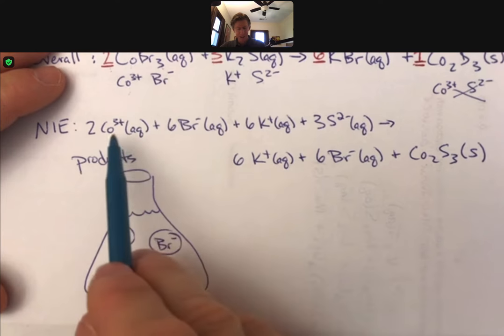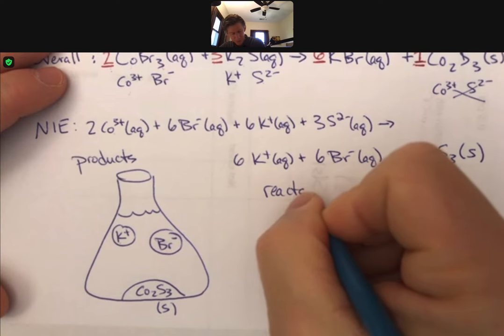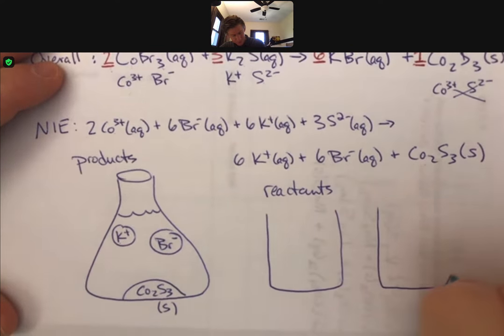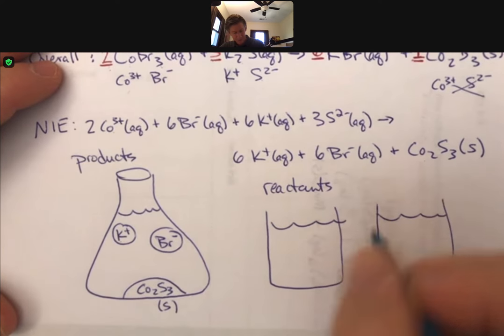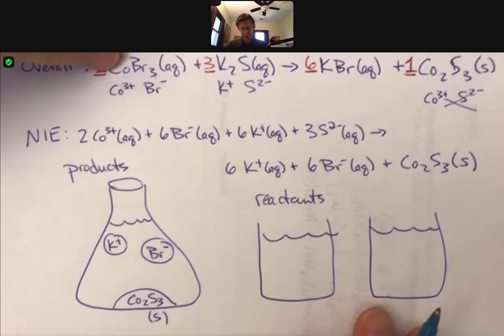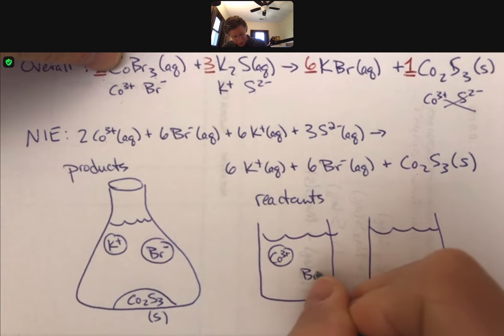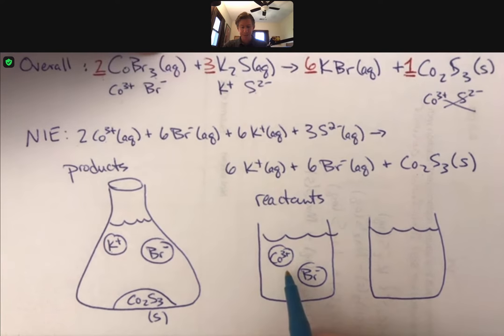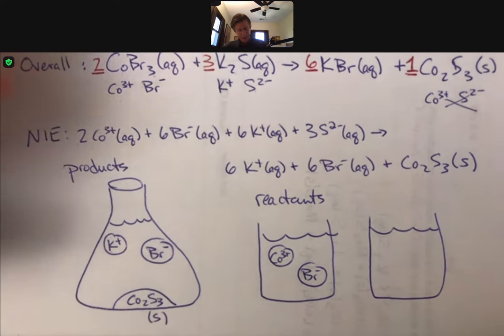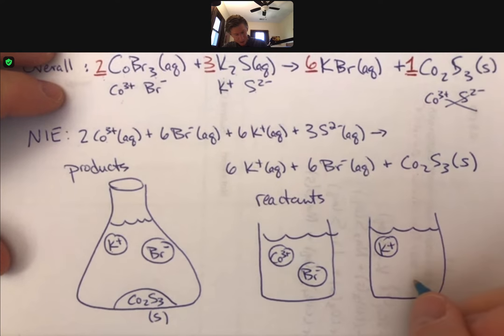And before we mix them together, all of these ions were in test tubes or beakers. Let's draw them in beakers because I think that'll be easier. And in one beaker we had cobalt three bromide, so we've got cobalt three plus, bromide minus, around in solution. It's not, right, aqueous means they're not together, they're floating around in solutions separately. Same thing for the potassium and the sulfide.